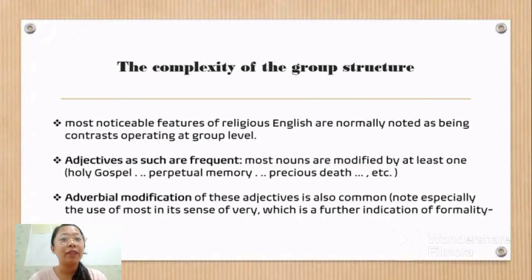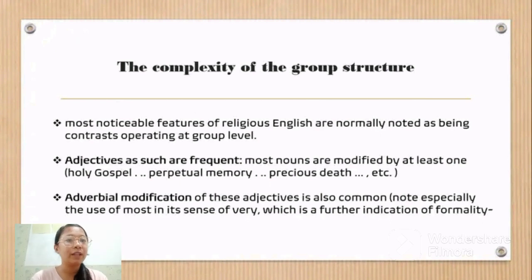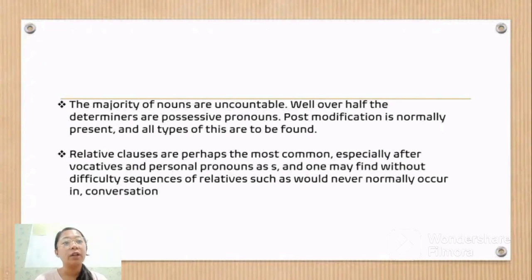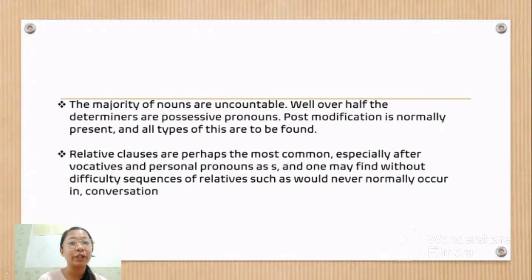Within the nominal group, we should single out the following points for special attention. This is one of those varieties where adjectives are allowed to follow the noun. Adjectives as such are frequent — most nouns are modified by at least one — for example, in the Holy Gospel, perpetual memory, precious death, and so on. The majority of nouns are uncountable. Over half the determiners are possessive pronouns. Post-modification is normally present, and all types are to be found. Relative clauses are perhaps the most common, especially after vocatives and personal pronouns, and one may find without difficulty sequences of relatives such as would never normally occur in conversation.